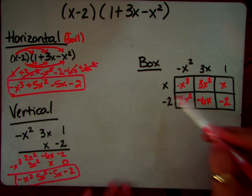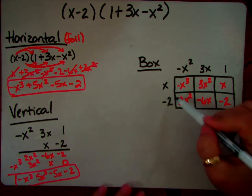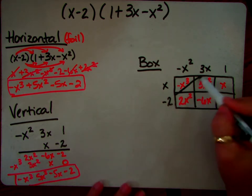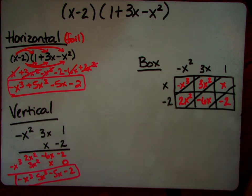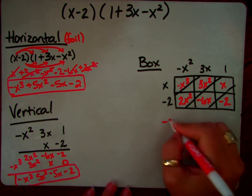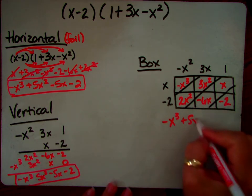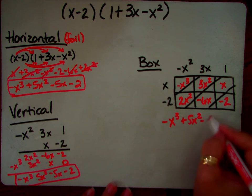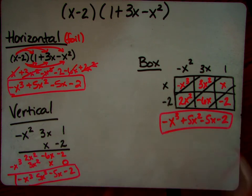So your answer is inside the box, and you just have to combine like terms. And if you kind of look at it diagonally, that's your x cubed. Those are your x squareds, those are your x's, and then you have your constant. So you write it, going left to right. Here's my 5x squared. Here's my negative 5x, and here's my negative 2. Okay, so it's up to you which way you want to multiply.